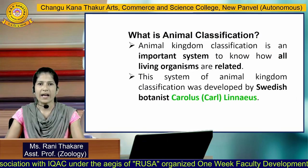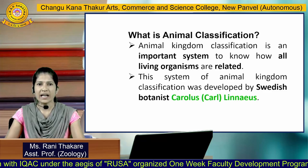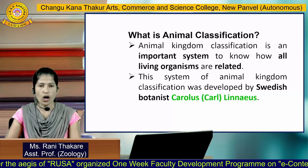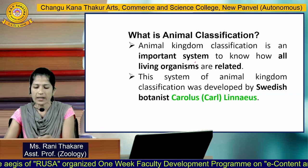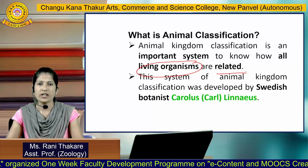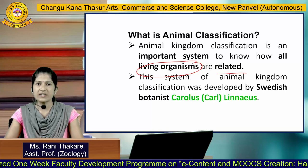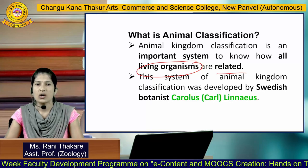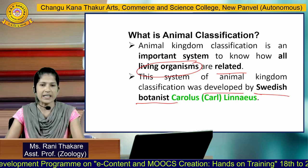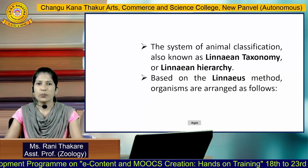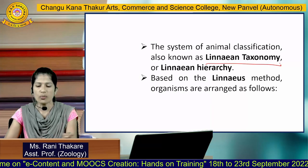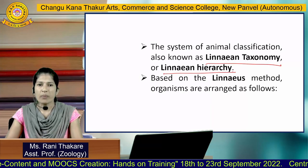Animal classification is an important system to know how all living organisms are related — that means how one organism is related to another. This system of animal classification was developed by the Swedish botanist Carolus Linnaeus. He put forward a system known as Linnaean taxonomy or Linnaean hierarchy.